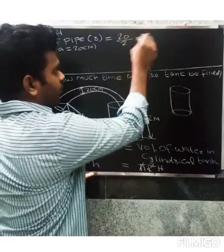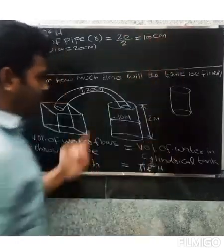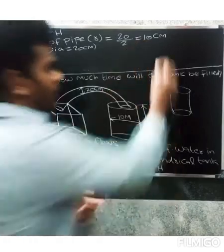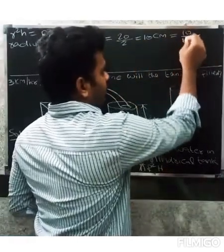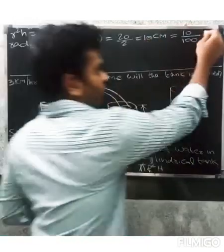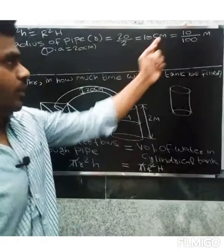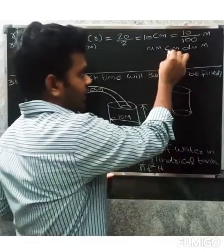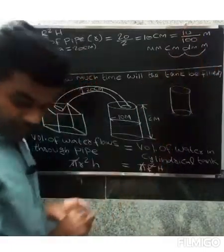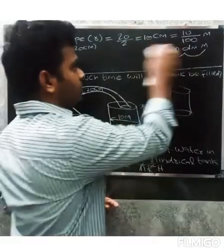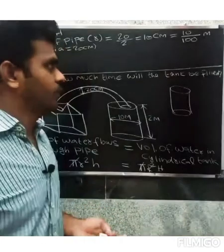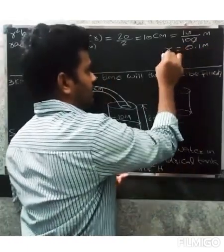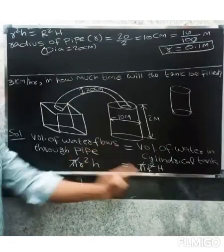Diameter equals 20 cm, so radius equals 20 divided by 2 equals 10 cm. Converting to meters: 10 divided by 100 equals 0.1 meters. So the radius of the pipe is 0.1 meters.